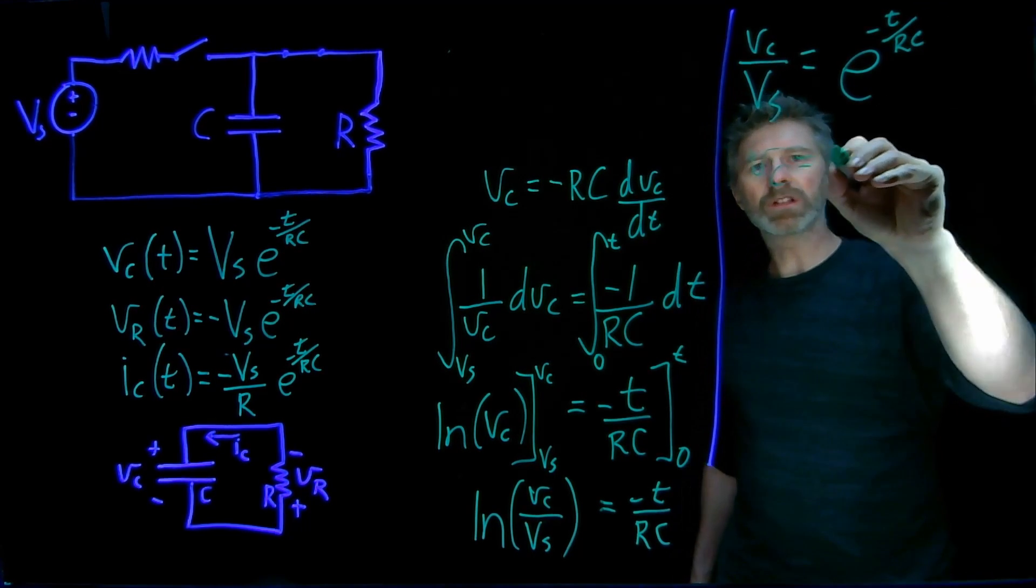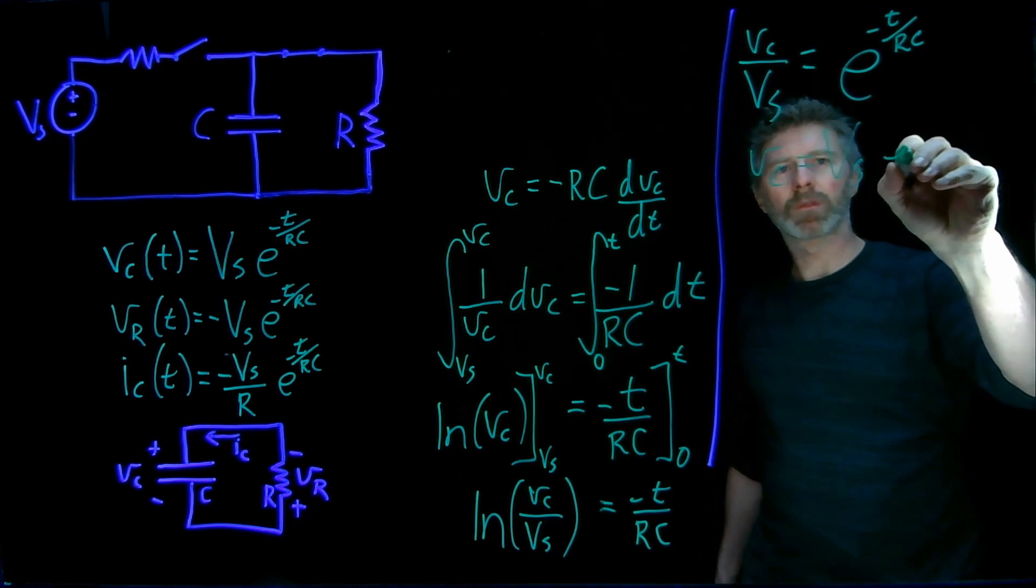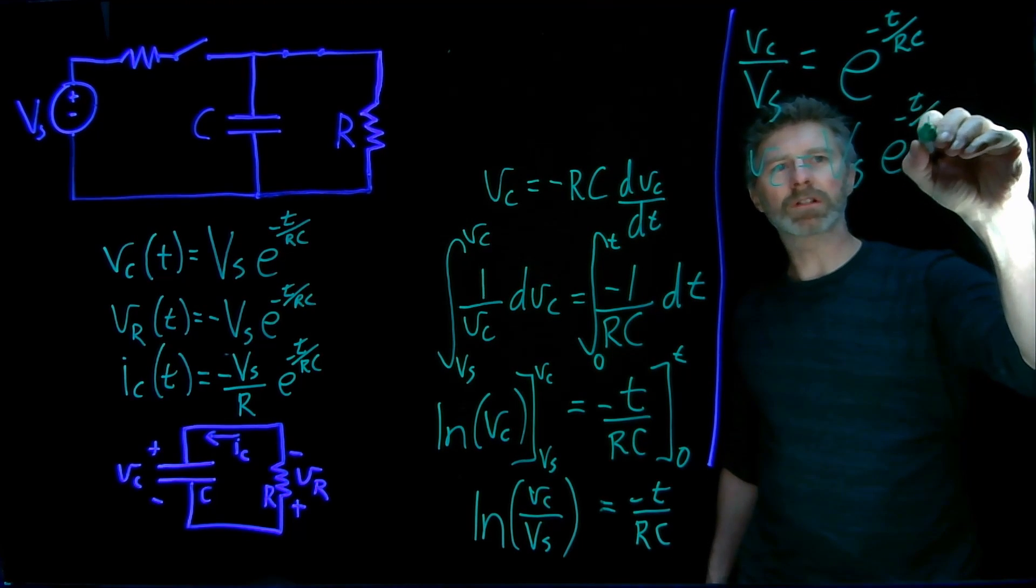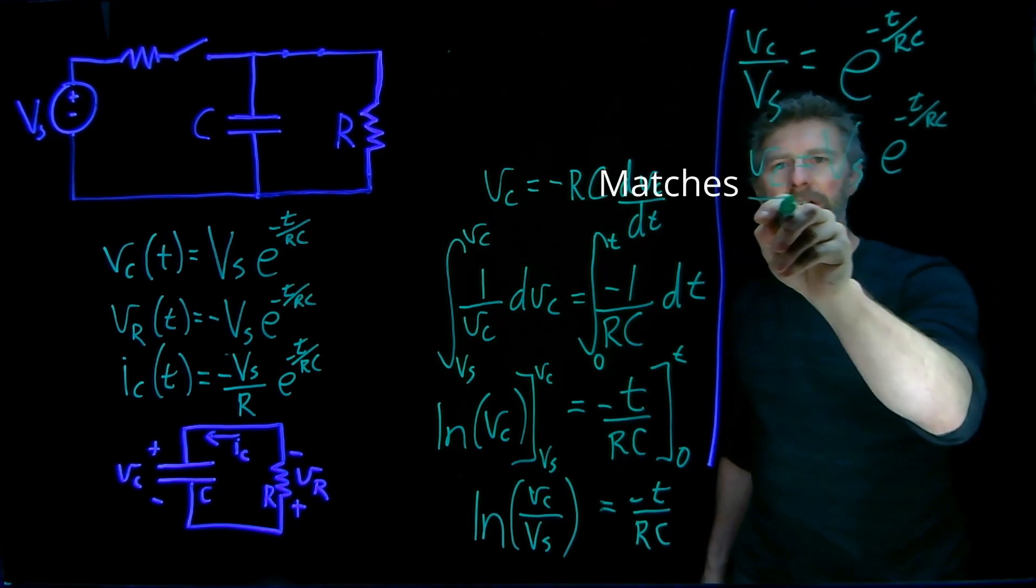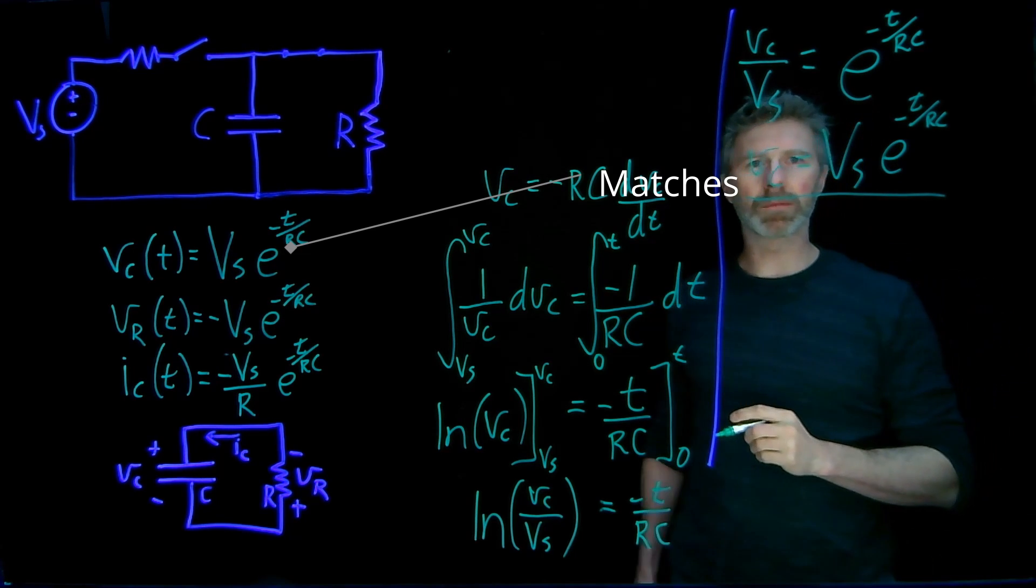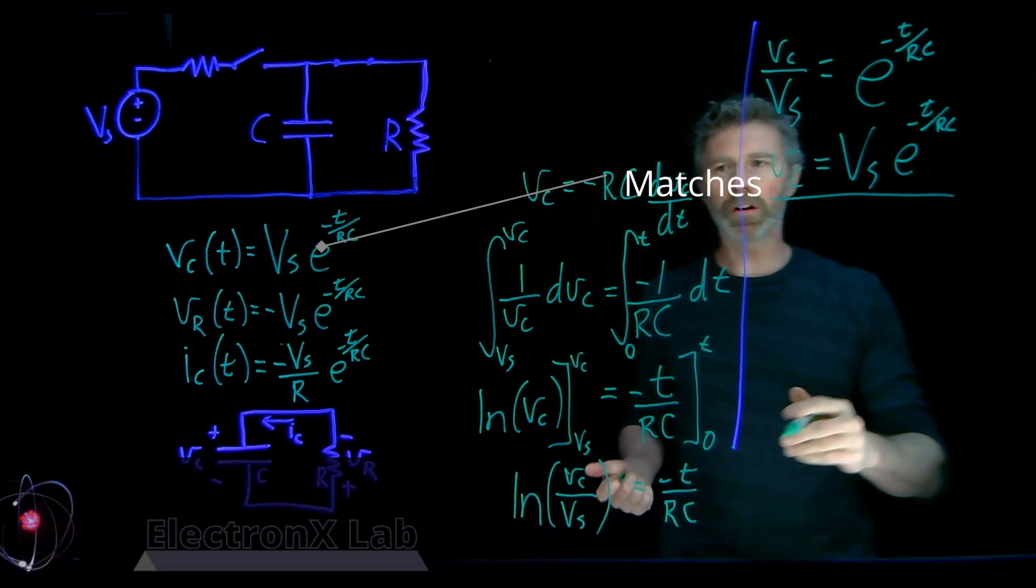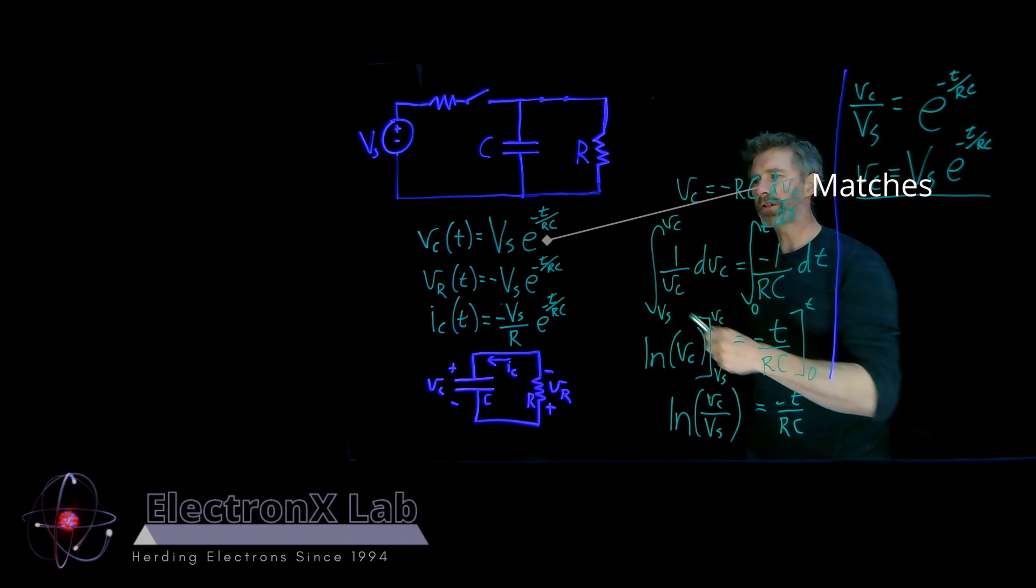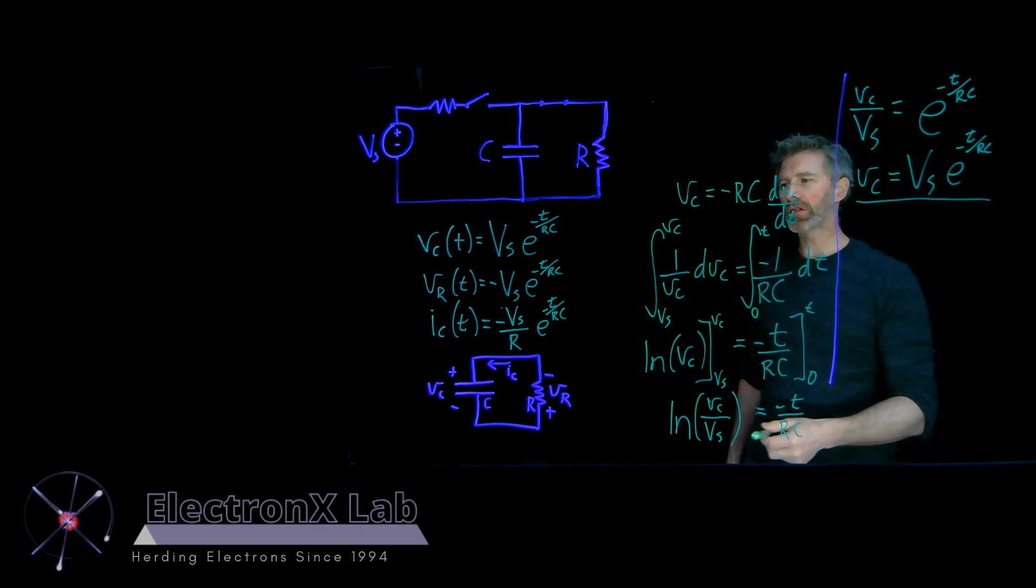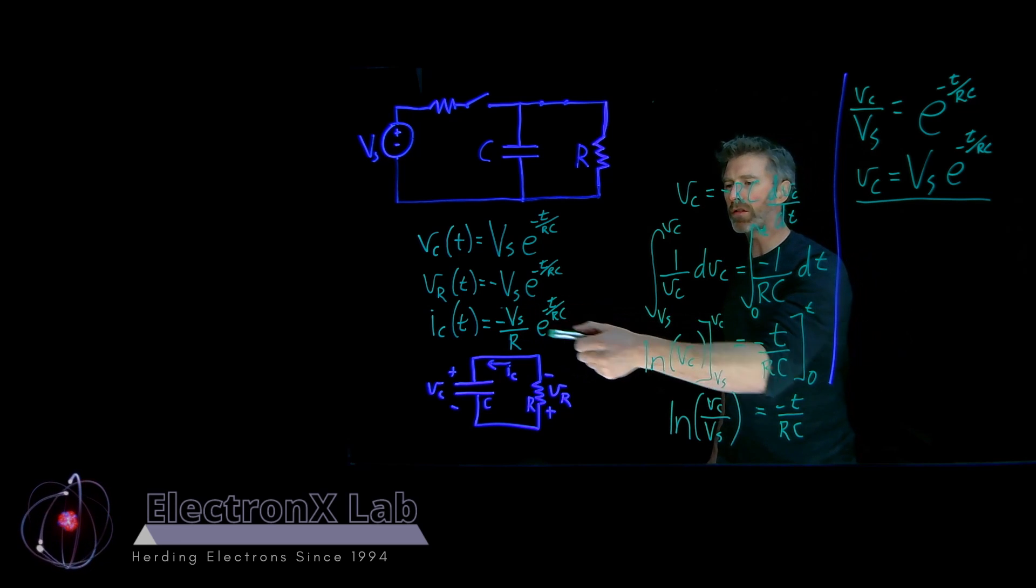Finally, I get VC is equal to VS E to the negative T over RC. And there's my expression for the voltage across the capacitor over time. And you can see, since I have VC is equal to negative VR, that's where I get this expression. And then current through the resistor will simply be that negative VS over R.